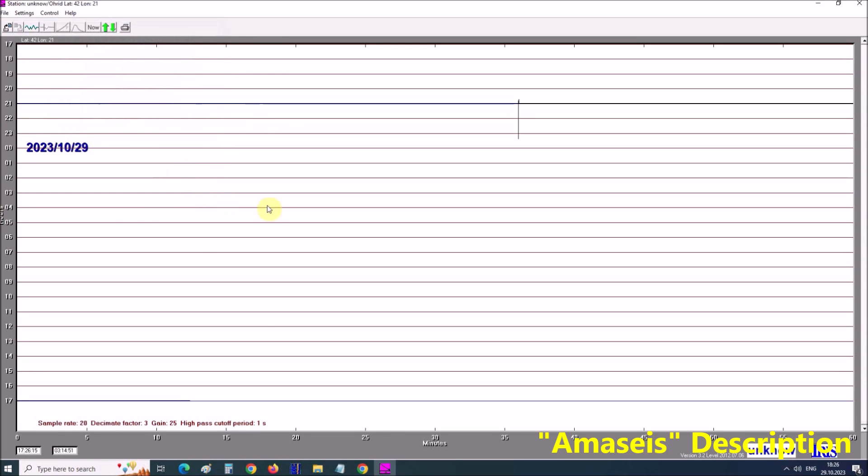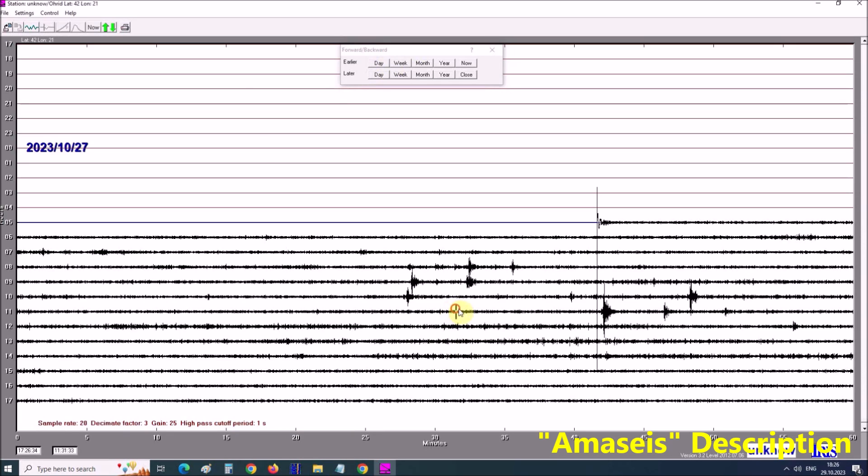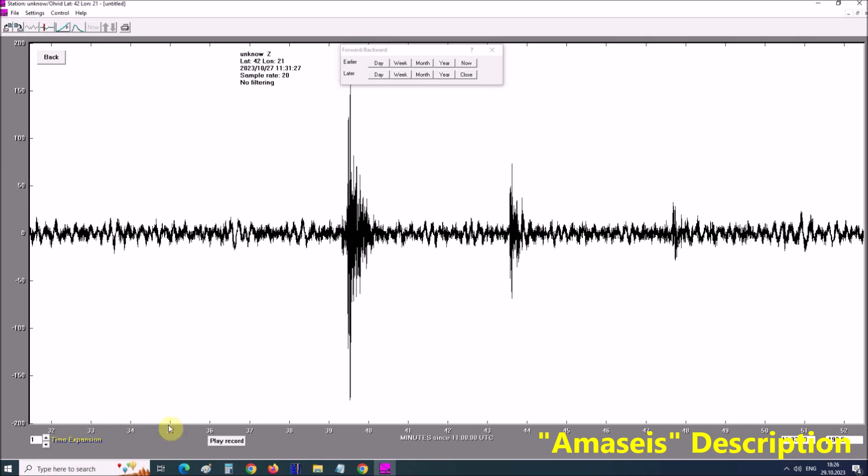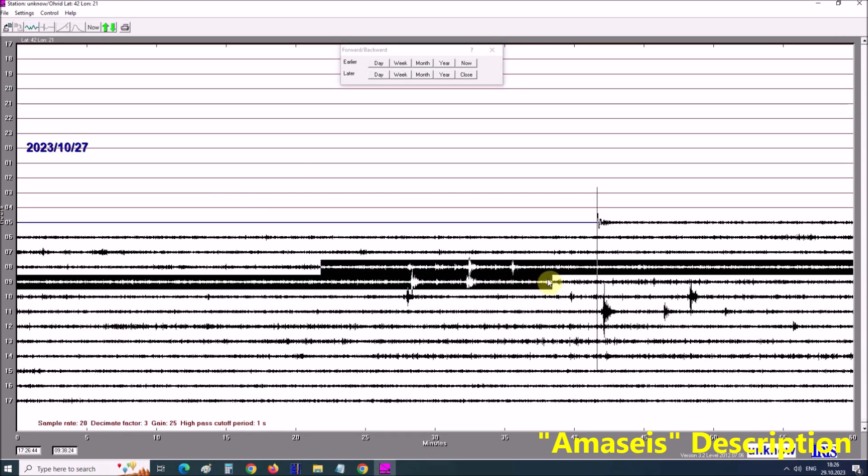During the operation of the software, we can constantly change all these settings. We can also zoom in and analyze a specific time period from the graph. For example, this period. Zoom. Or this longer period.